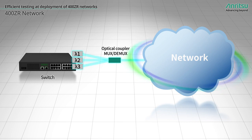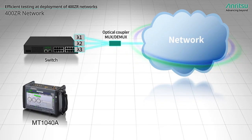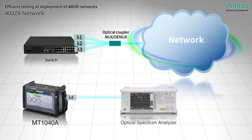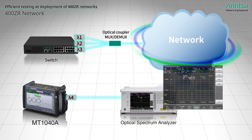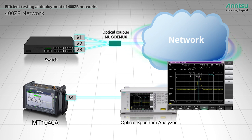Data center operators are deploying 400 ZR optical transceivers for interconnects. The output optical signal frequency of 400 ZR optical transceivers can be changed. Therefore, before executing Ethernet frame tests and commissioning the network, operators must use an optical spectrum analyzer to check that the optical transceiver is transmitting an optical signal at the expected frequency.